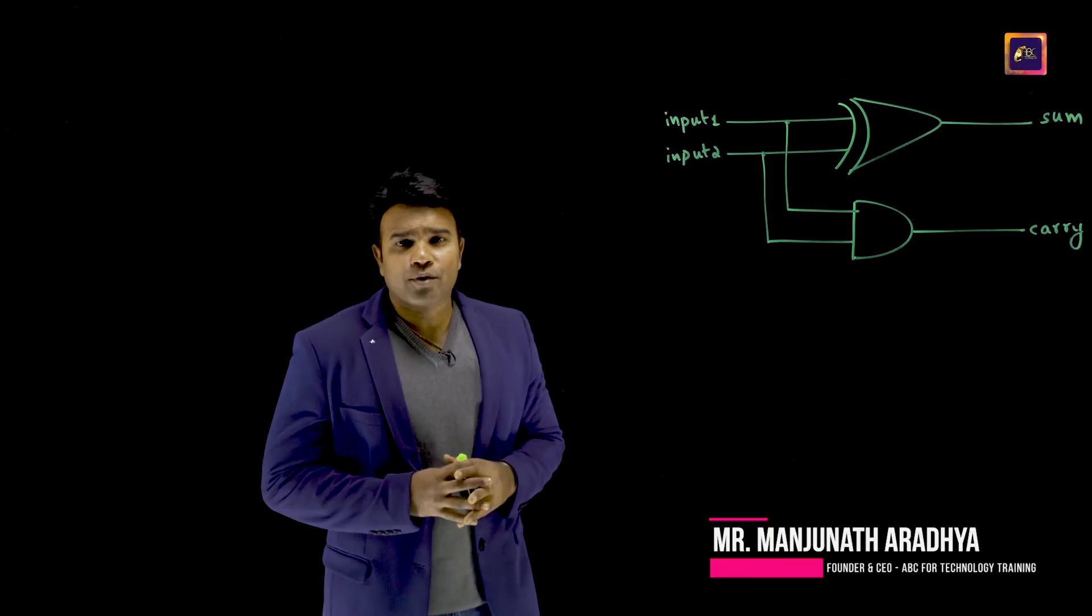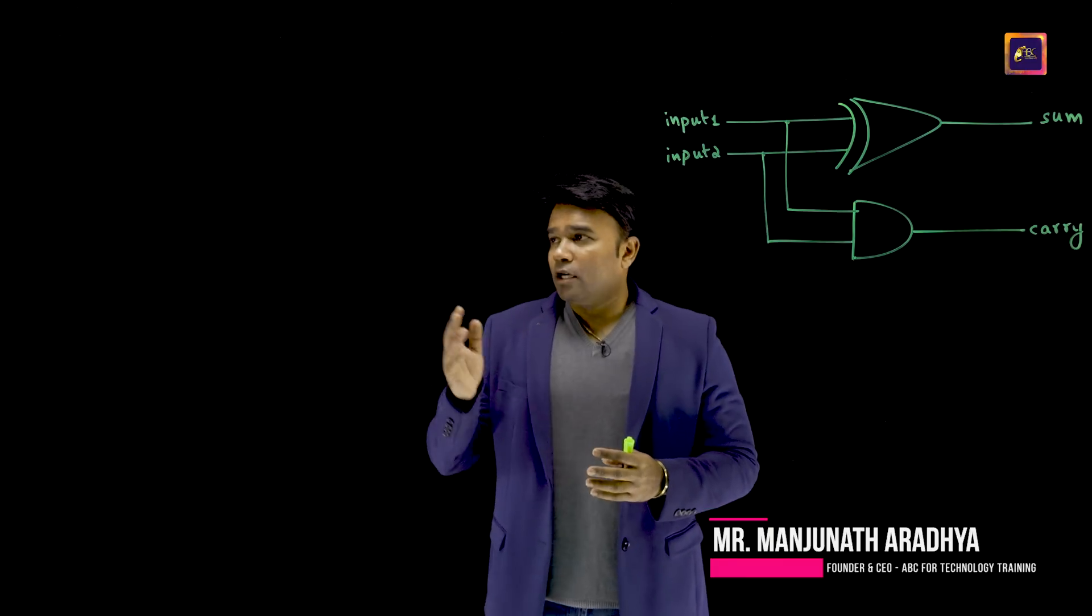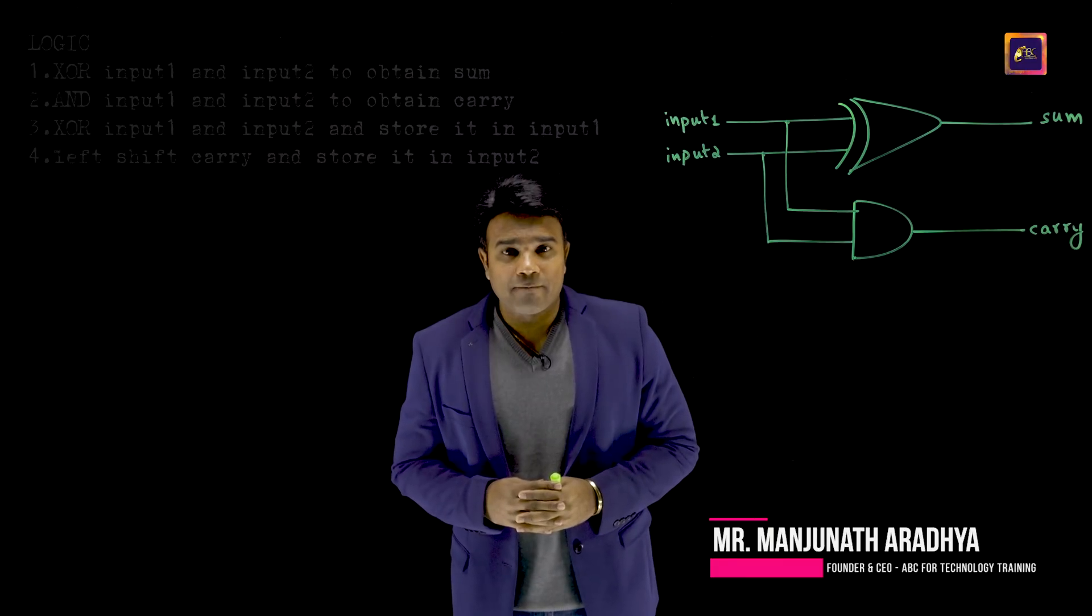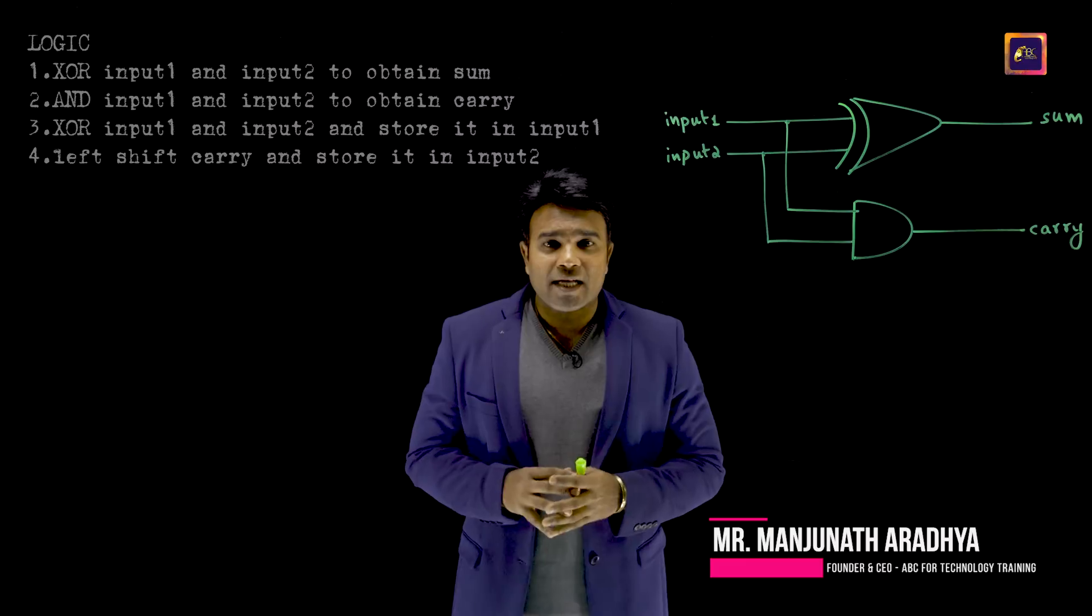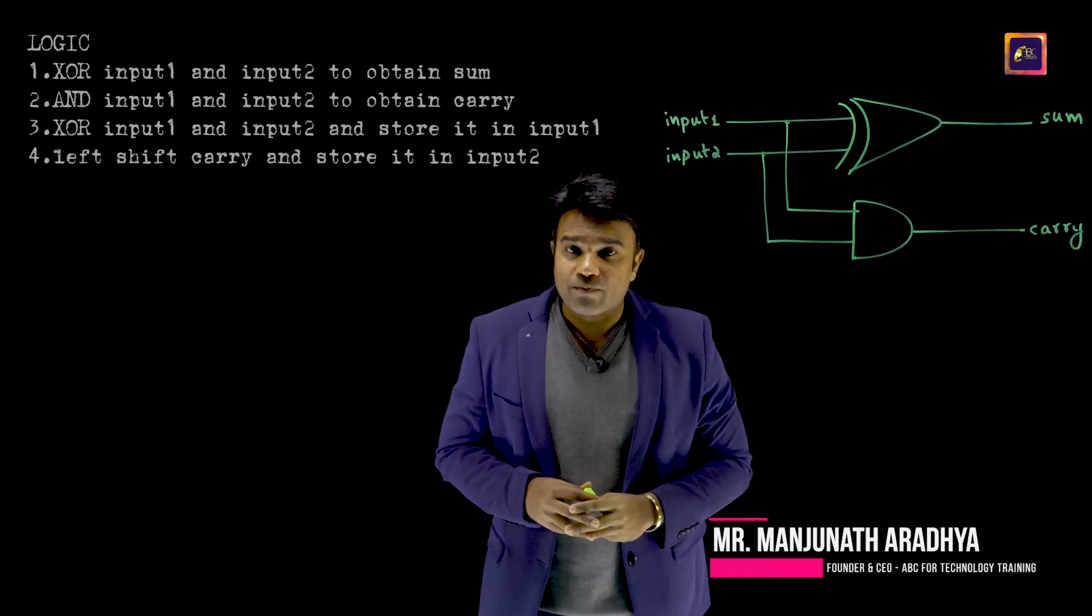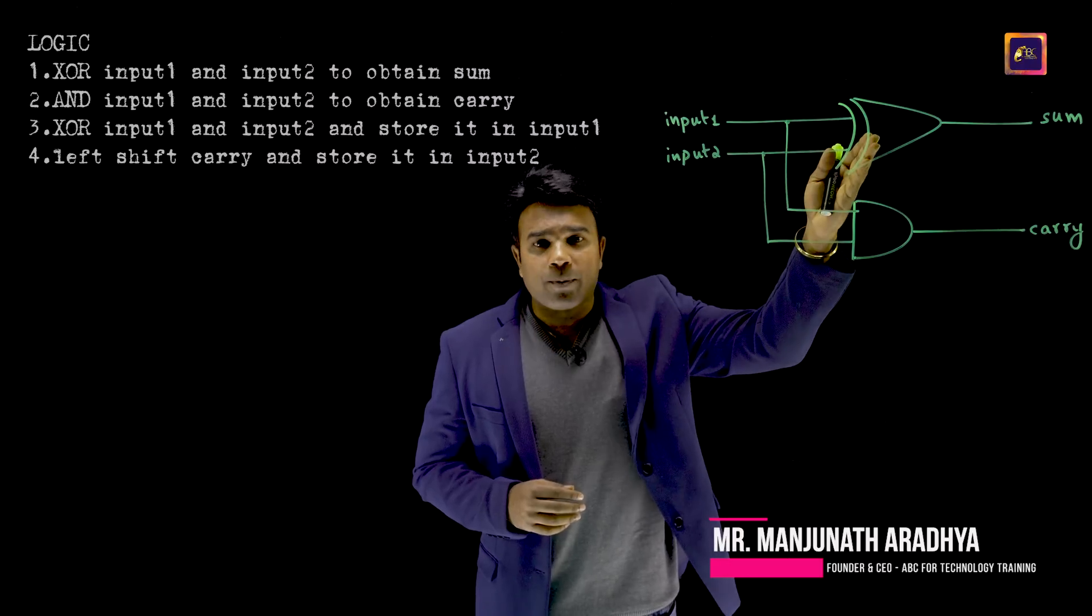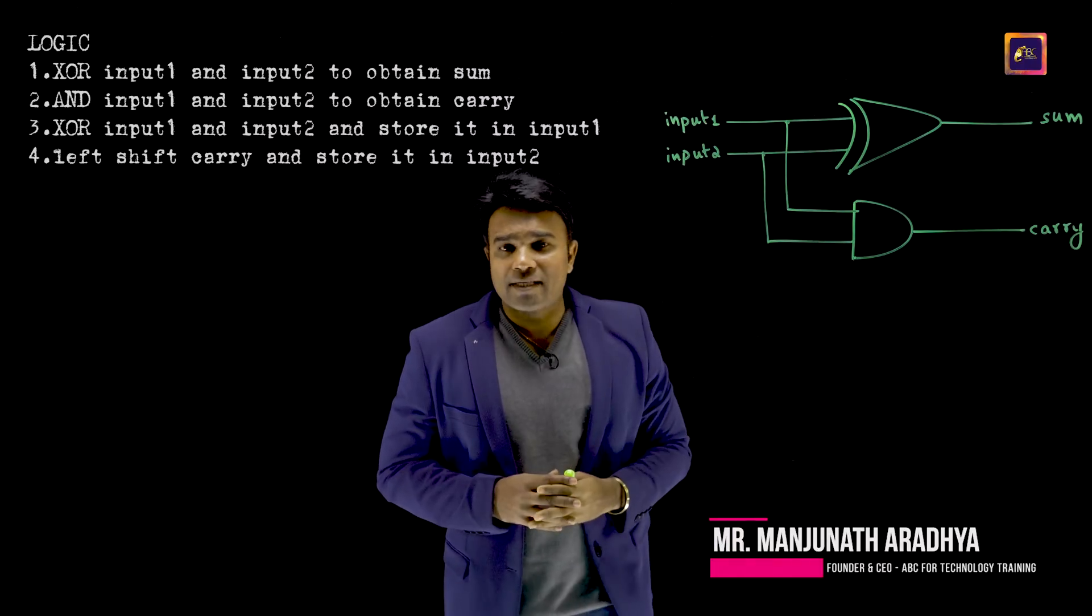Let me begin by getting the adder circuit back on the screen. I would also love to have the four steps of my logic. And if you notice, the first step of the logic as well as the first part of the circuit both mean the same, that I am supposed to perform the XOR operation between input 1 and input 2 and I am supposed to obtain the sum.